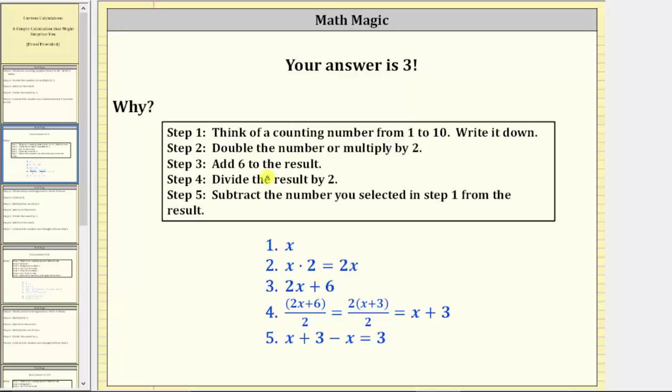Step three was to add six to the result. If we add six to two x, this gives us the expression two x plus six.